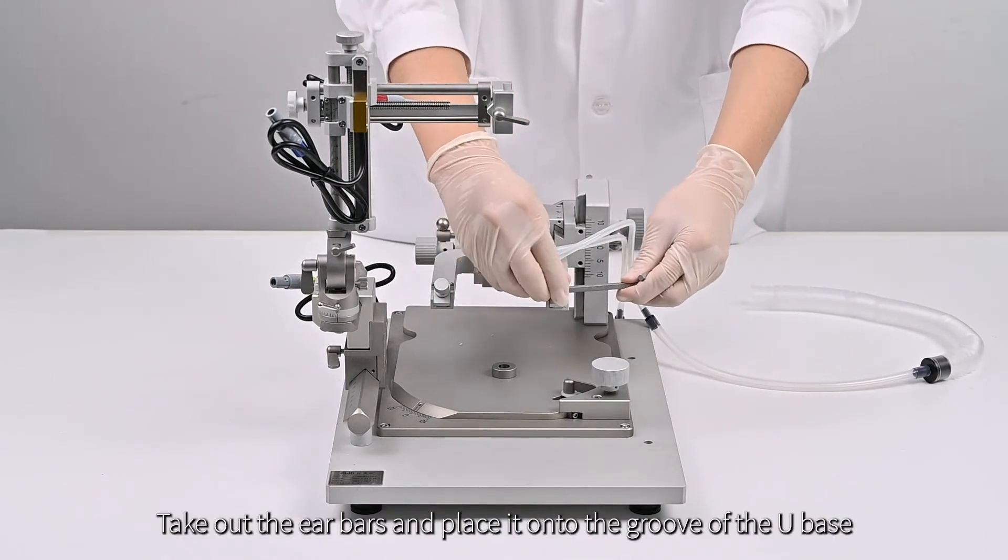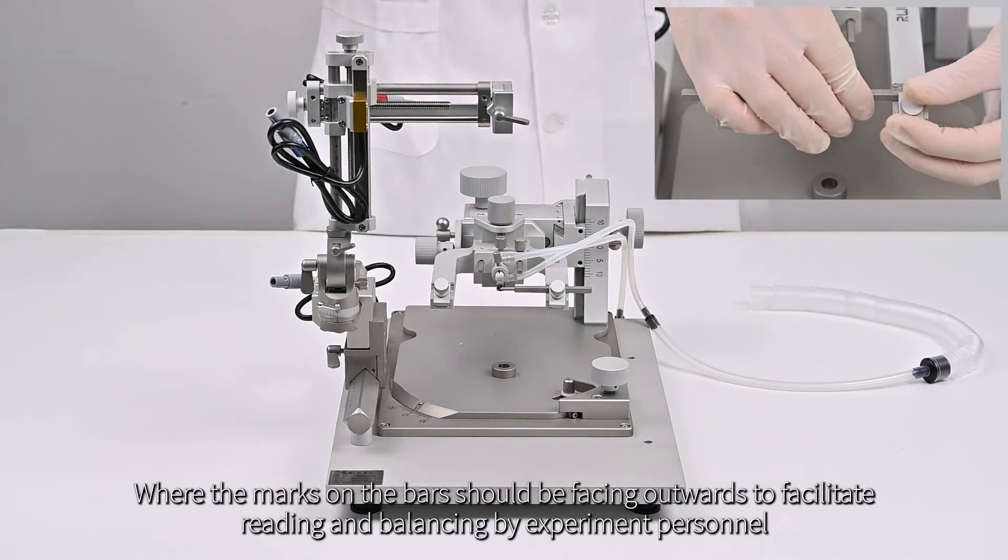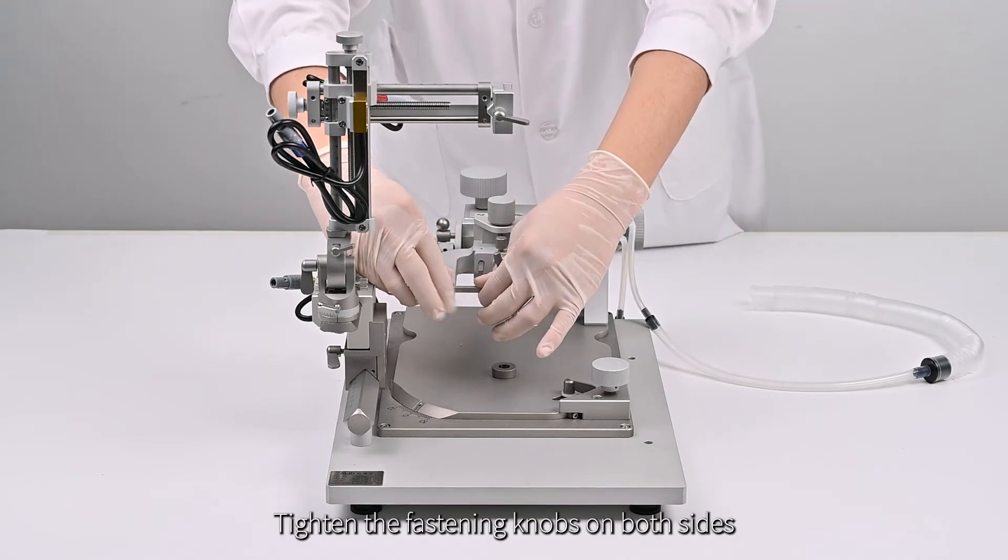Take out the earbars, and place it onto the groove of the U-base, where the marks and the bars should be facing outwards to facilitate reading and balancing by experiment personnel. Tighten the fastening knobs on both sides.